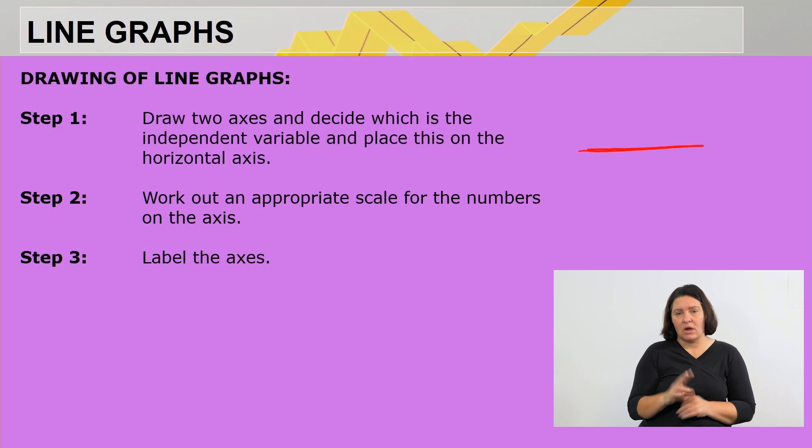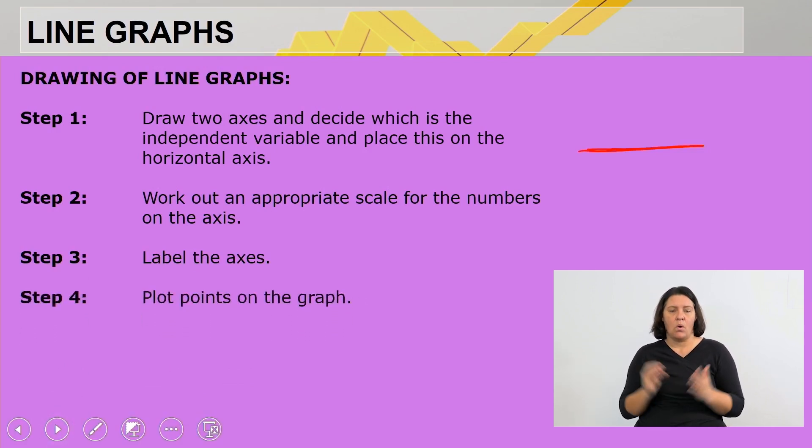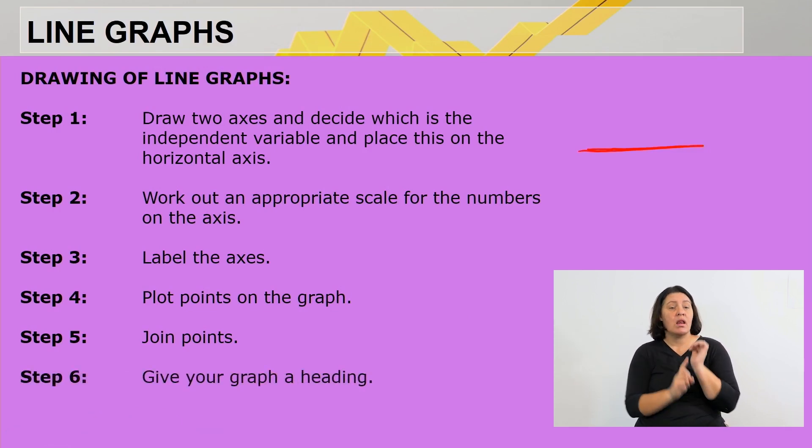Step number three, you label your axes. Step number four, you plot points on the graph. Step number five, you join the points. And lastly, give your graph a heading. Remember it must be an appropriate heading. It must speak to what your context is all about.